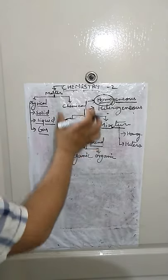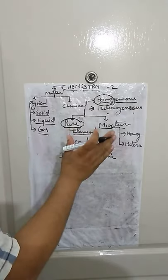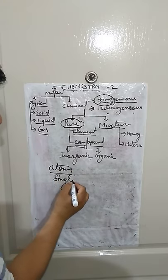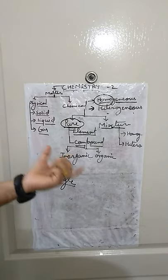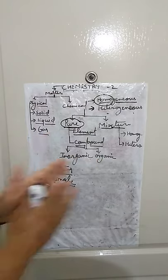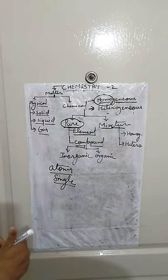Now what is an element? An element is a state of matter or substance in which only one type of atom is present — the substance which is made up of a single type of atom is known as an element. Let me remind you of a concept from class 9 — Dalton's atomic theory. One important postulate of that theory was: an element consists of the same type of atom, but different materials consist of different types of atoms.